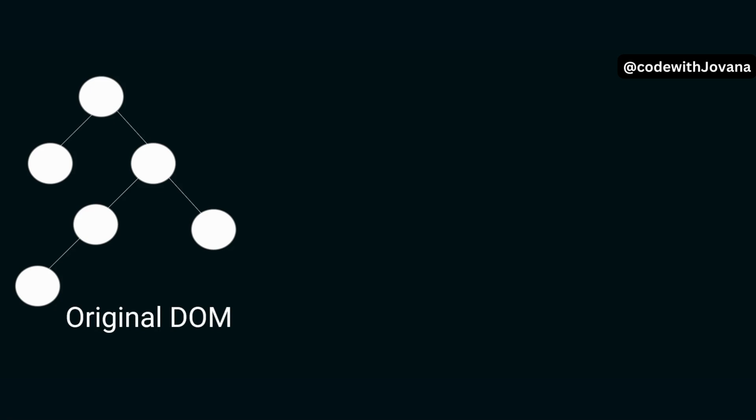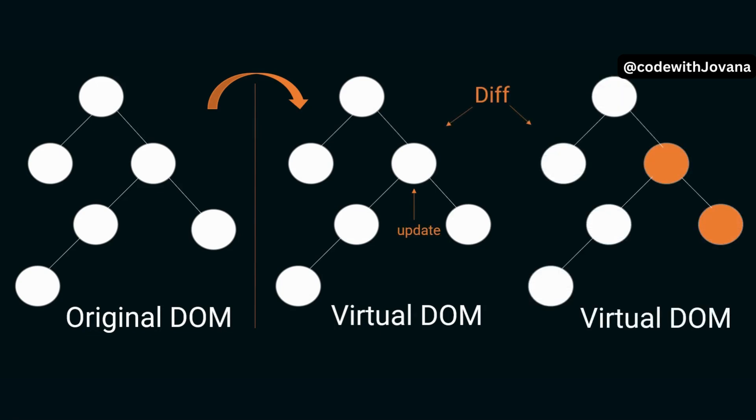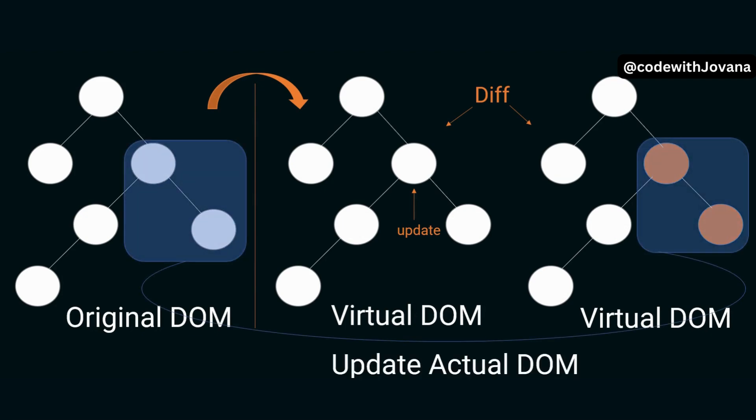By using the virtual DOM, React is able to optimize the process of updating the UI, resulting in faster and more efficient rendering of changes. Since the virtual DOM is a lightweight copy of the actual DOM, it can be quickly updated and manipulated without causing unnecessary re-renders or re-flows.